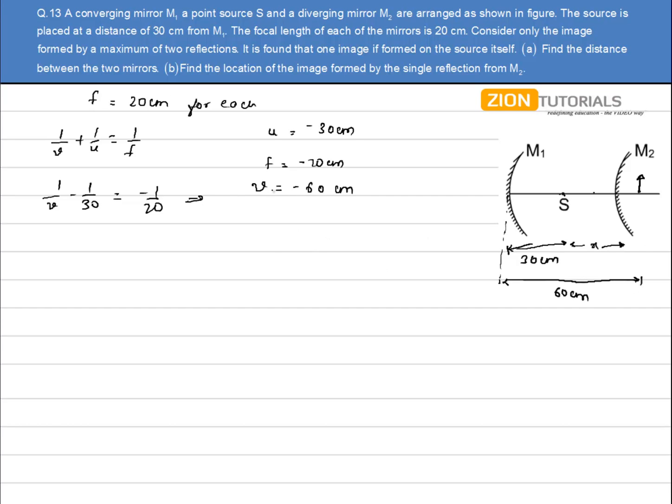Now, this image will act as an object for this mirror, M2. So for M2, u value will be 60 minus (30 plus x), that is given by 30 minus x. And the focal length is plus 20 cm because it is a diverging lens. So again using the mirror equation, I do have 1 by v plus 1 by (30 minus x) equals 1 by 20.